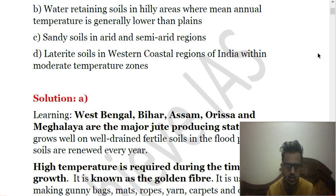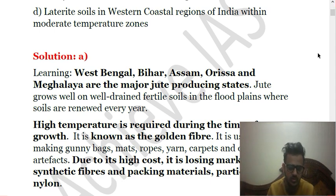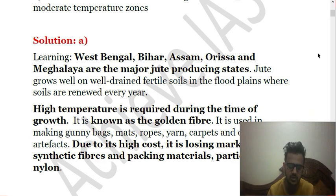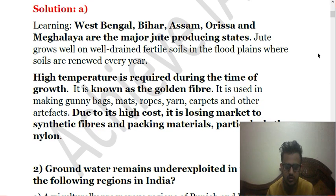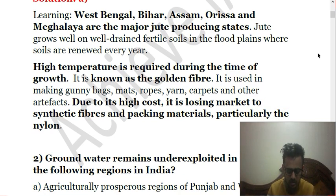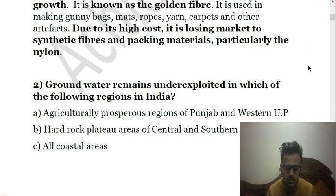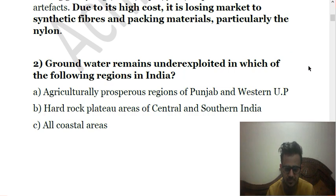There are many states that grow jute — for example, West Bengal, Bihar, Assam, Odisha, and Meghalaya are the major jute-producing states. They grow well in well-drained floodplain soils that are renewed every year, and they require high temperature at the time of growth. Also, friends, jute is known as golden fiber — please note this important point. It is used for multiple purposes, for example making gunny bags, mats, ropes, yarn, carpets, and other artifacts. It is costly, and now due to the development of alternatives like synthetic products — particularly nylon — jute has been losing market. This is a cause of concern for jute producers as well as governments, as there will be loss in revenue and employment if jute cultivation is reduced.